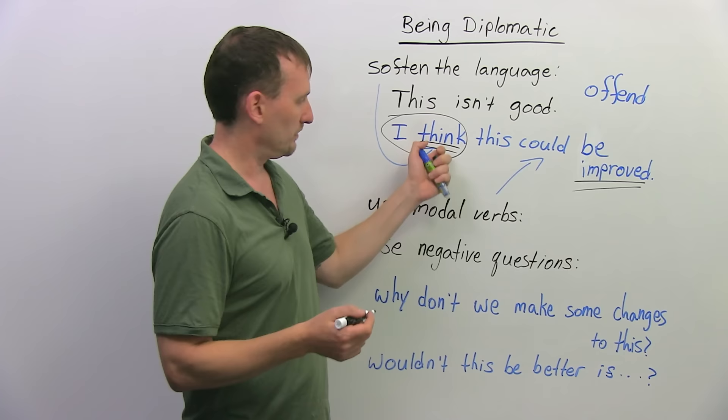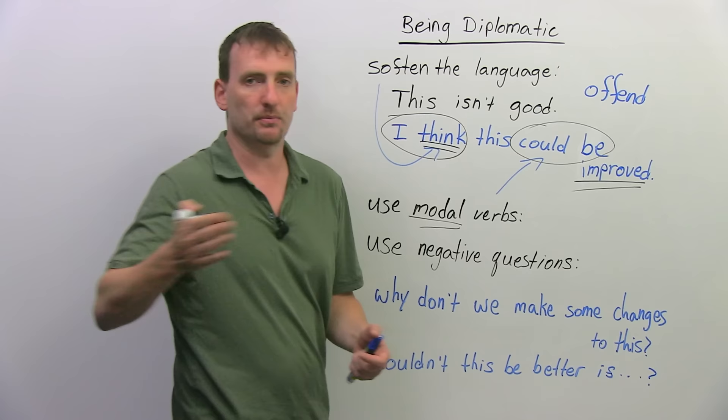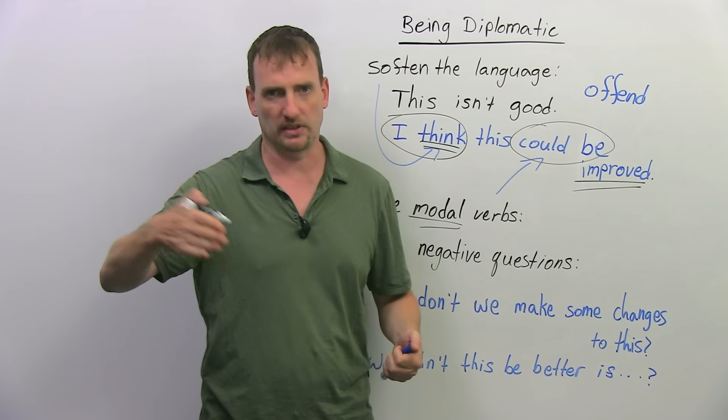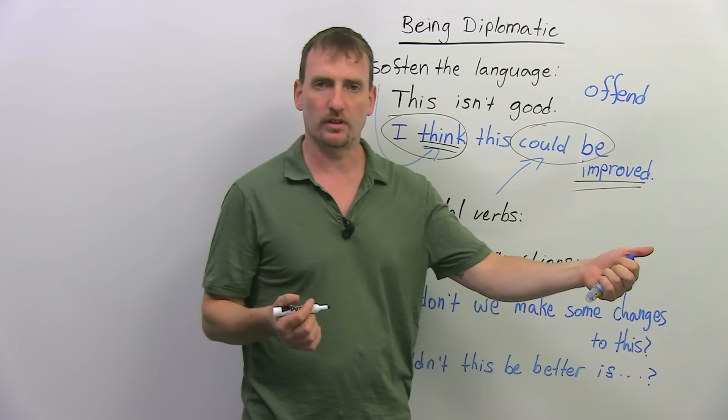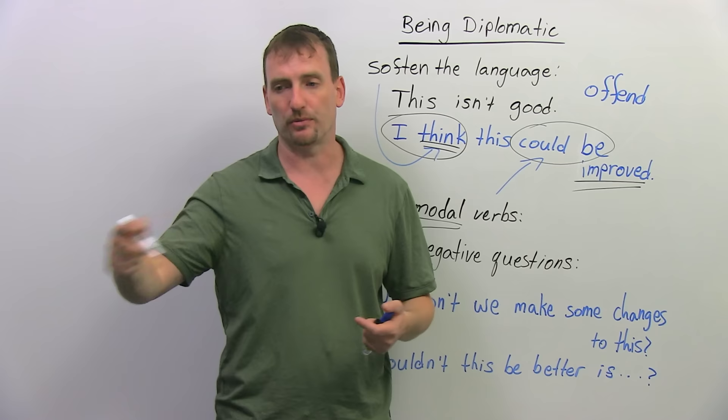And use modal verbs. Might, may, could, would, etc., right? So, I used here. It could be improved. I didn't say, I think this needs to be improved, or this needs improvement, or whatever. That's, again, a statement. This could be improved means, again, I'm offering a possibility. And possibilities open the door to discussion. I'm not saying it needs to be improved, you have to improve it, which are kind of modals, but I'm talking about softening modals. What you're doing is you're opening the door for discussion.